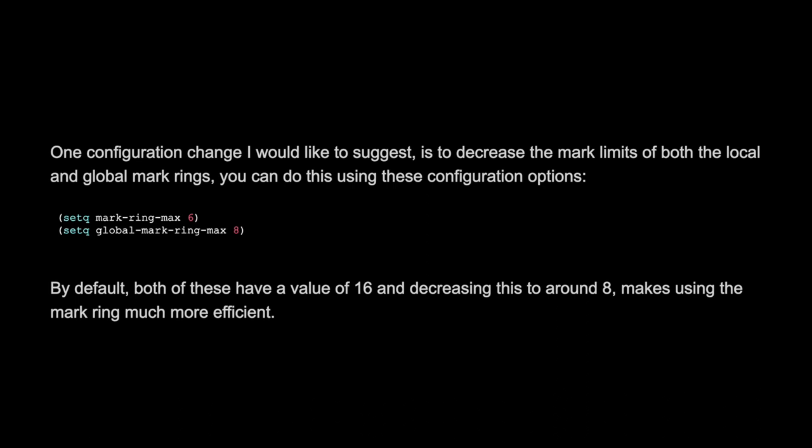One configuration change I would like to suggest is to decrease the Mark limits for both the local and global Mark rings. You can do this using these configuration options: mark-ring-max and global-mark-ring-max. By default both of these have a value of 16, and decreasing this to around 8 makes using the Mark ring much more efficient.